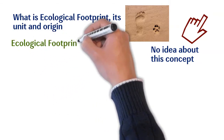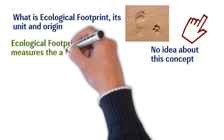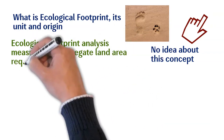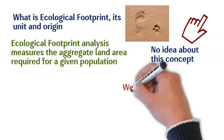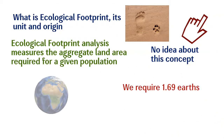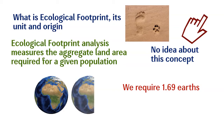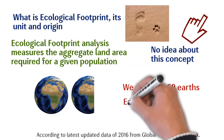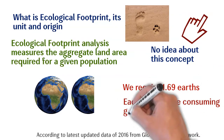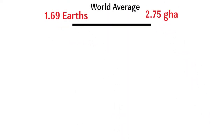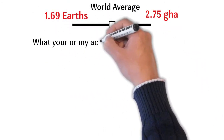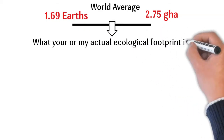Ecological footprint analysis measures the aggregate land area required for a given population to exist in a sustainable manner. We require 1.69 Earths to fulfill our global human needs. Each year we are consuming a global average of 2.75 global hectares per person, though this is a world average and doesn't tell us specifically what your or my actual ecological footprint is.